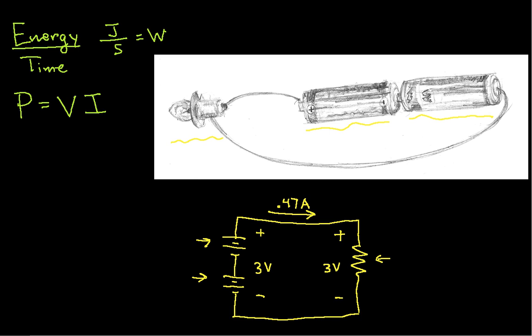As an example, if I look at the power dissipated by my light bulb, power doesn't actually go through light bulbs, it's dissipated by a light bulb, the power in this case is going to be the voltage across the light bulb, which I've labeled here as 3 volts, times the current going through the light bulb. In this case, the current going through the light bulb is 0.47 amps.